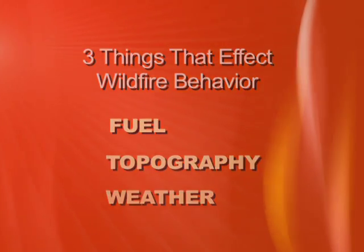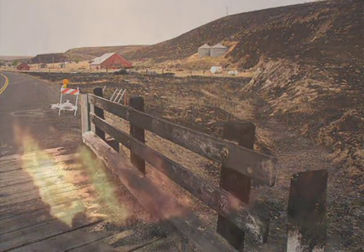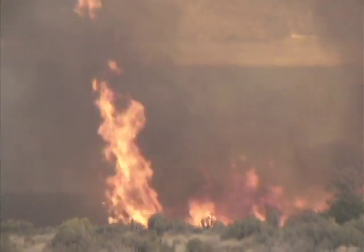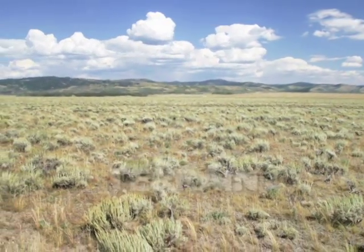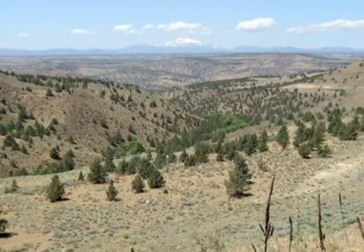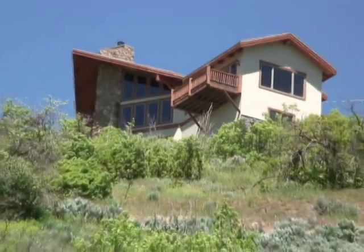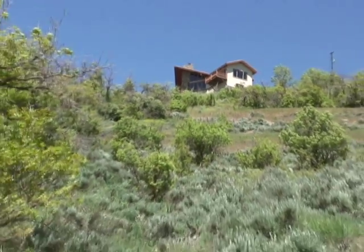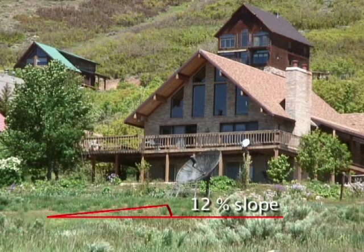As discussed earlier, fuel is anything that can burn, and we will discuss fuel types and vegetation in greater detail later in this DVD. Terrain is simply the lay of the land — the hills and valleys, the slopes and ridges. The most important thing to remember when discussing terrain is slope. Slope refers to how steep a hill is and is most often given as a percent. For example, the slope leading up to this home is about 12 percent.